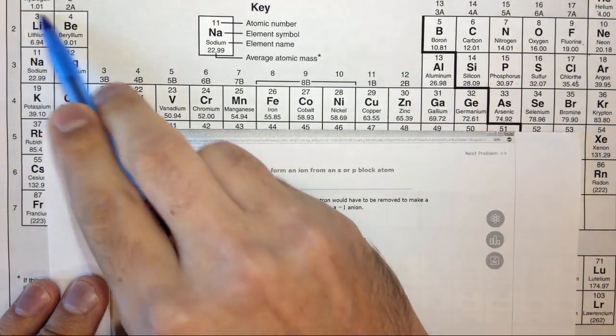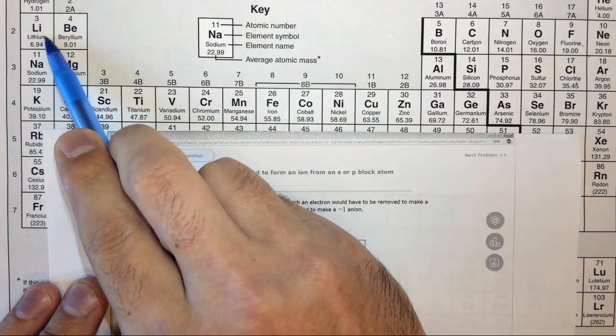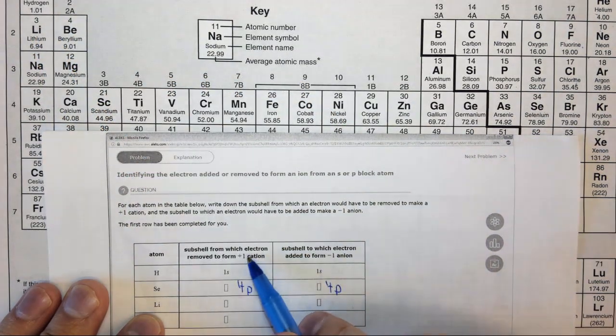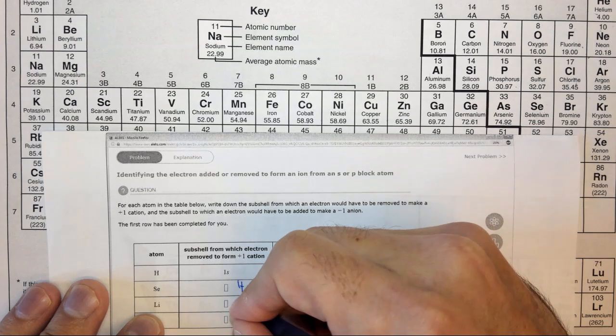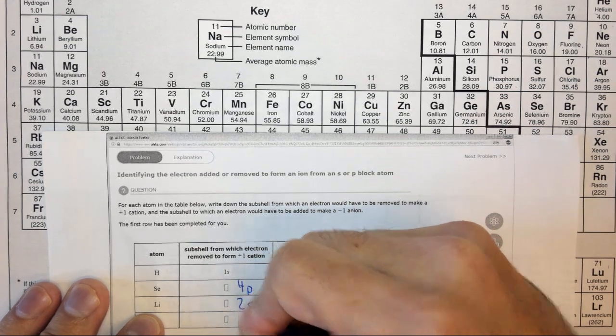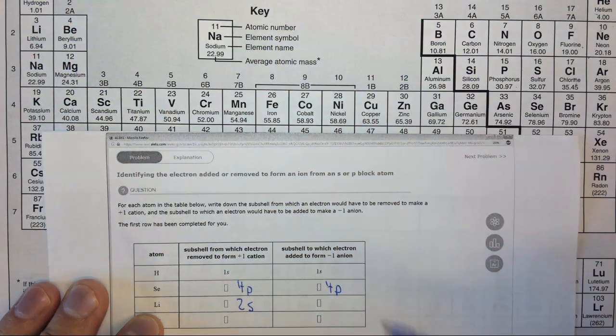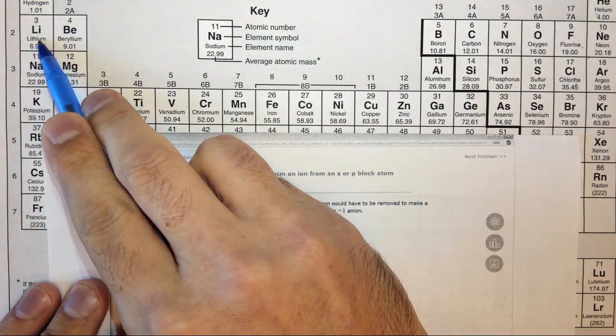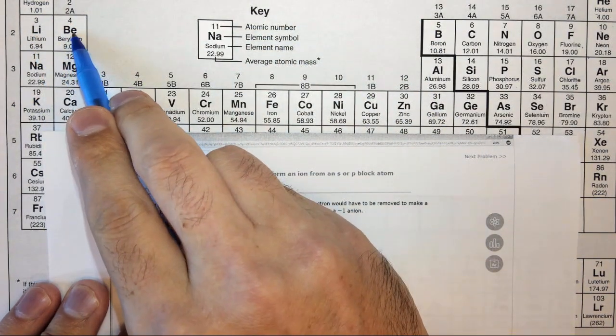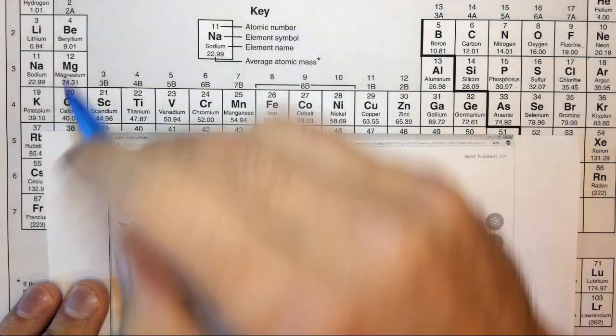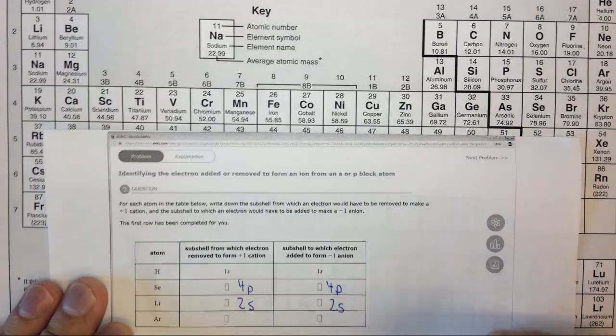For lithium, lithium is here in period 2. This is a 2s electron. If we take away that electron, we take away the outermost electron, it's in the 2s orbital because this is the s block in period 2. If we add an electron, there's still another electron we can put in the 2s orbital, so therefore we also add the electron to the 2s.